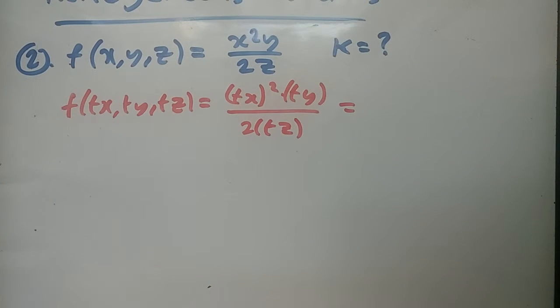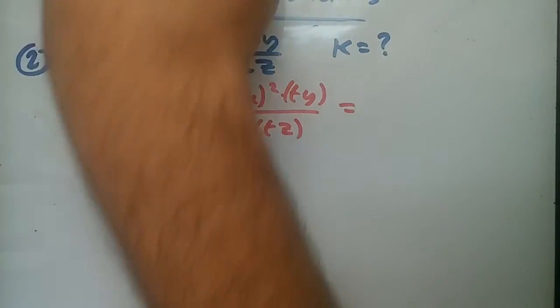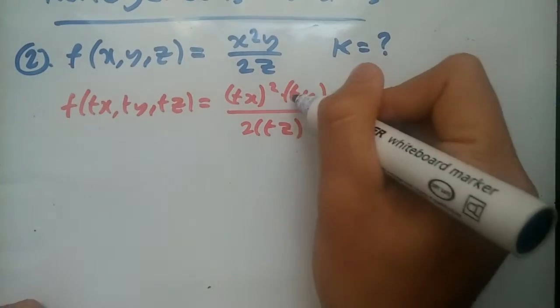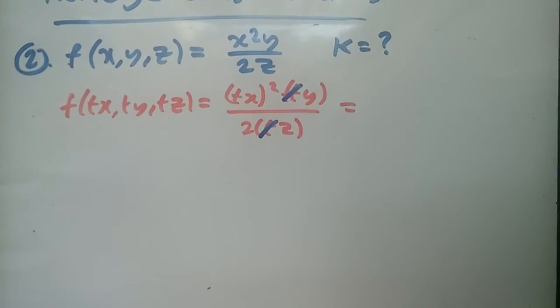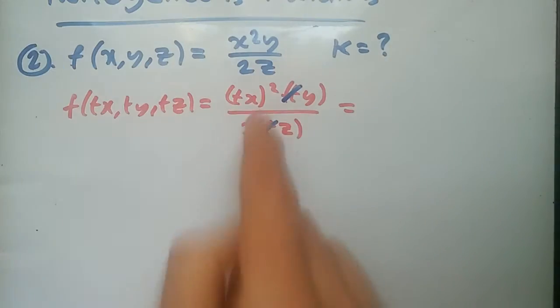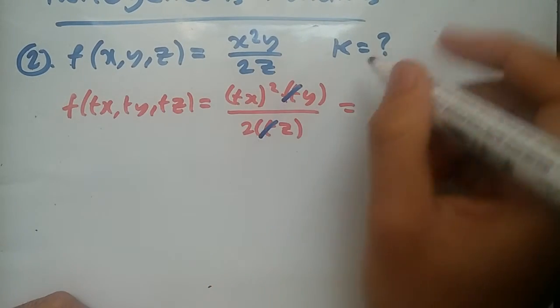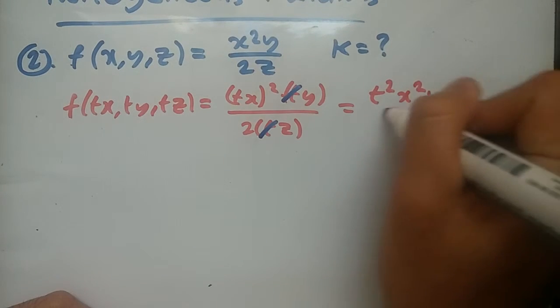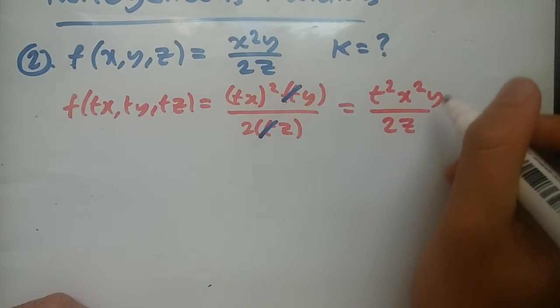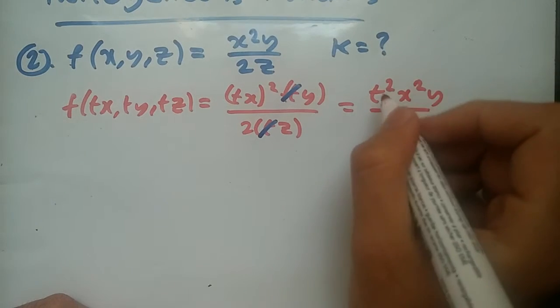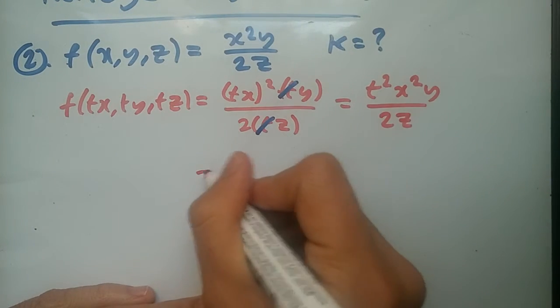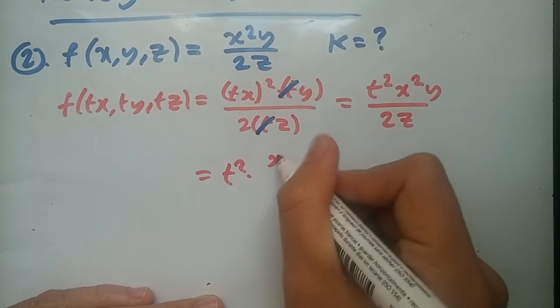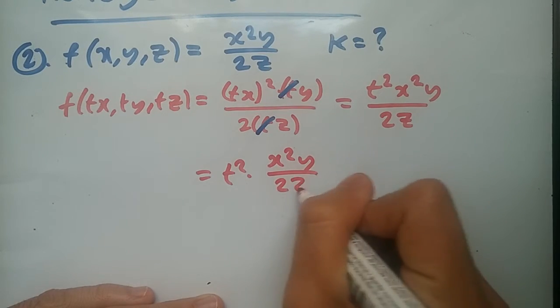So solving this, I mean you can even try factorizing now if you want. So you've got one t and one t here, so this t cancels this t. So what are we left with? Multiplying out, we're going to be left with t squared times x squared y over 2z. And straight away, taking t squared outside, we're going to have x squared y over 2z.